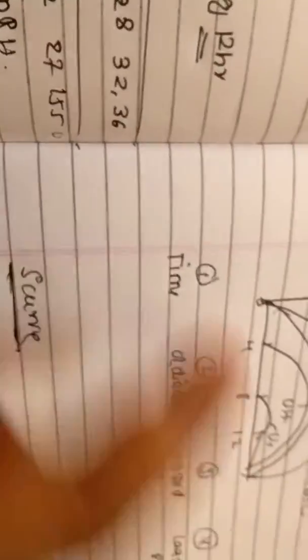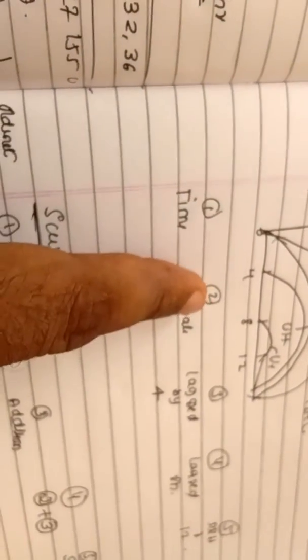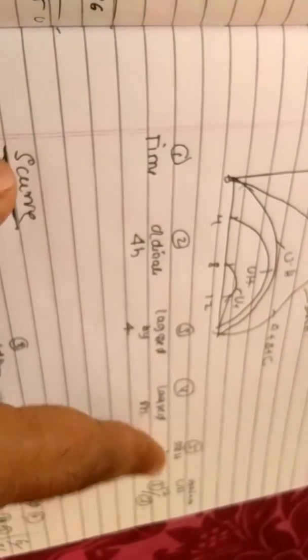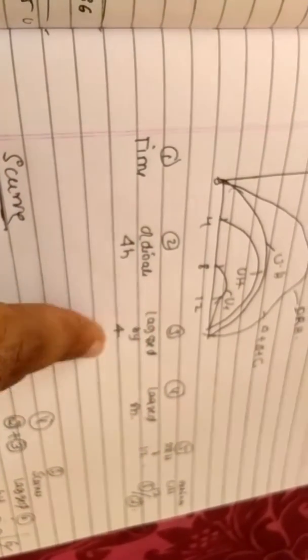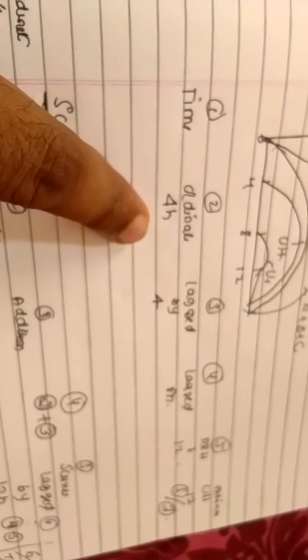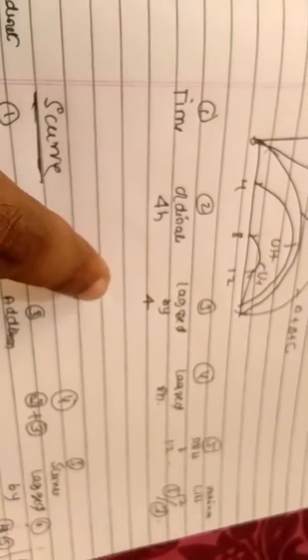After adding the three hydrographs, we divide by three to get the twelve-hour unit hydrograph. In the table, the first column is time, the second column is the four-hour ordinates as given. Then we need to write the lagged columns: lagged by four hours and lagged by eight hours. For calculating an eighteen-hour unit hydrograph, we would also need lagged by twelve hours.